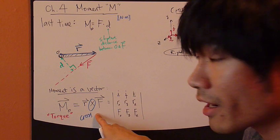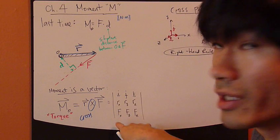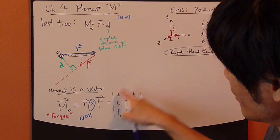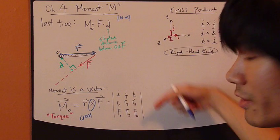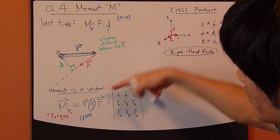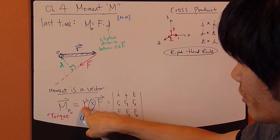Cross product can be calculated by using determinants. So here's the form, so you have three rows, three rows, and three columns. So I, J, K in the first row, the second row is this R right here, the components of R, so Rx, Ry, and Rz.